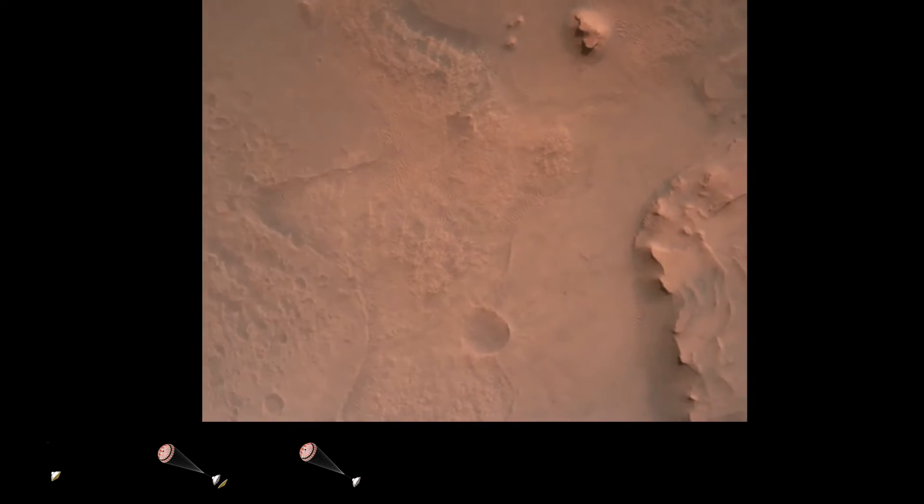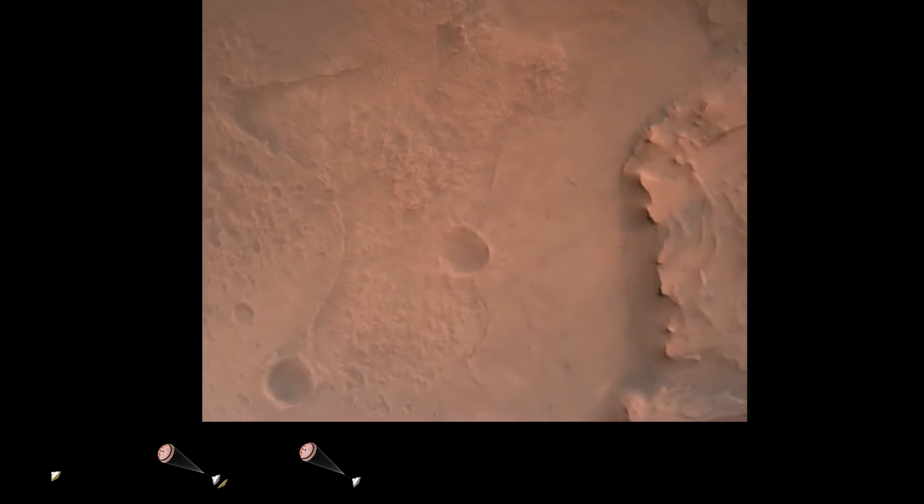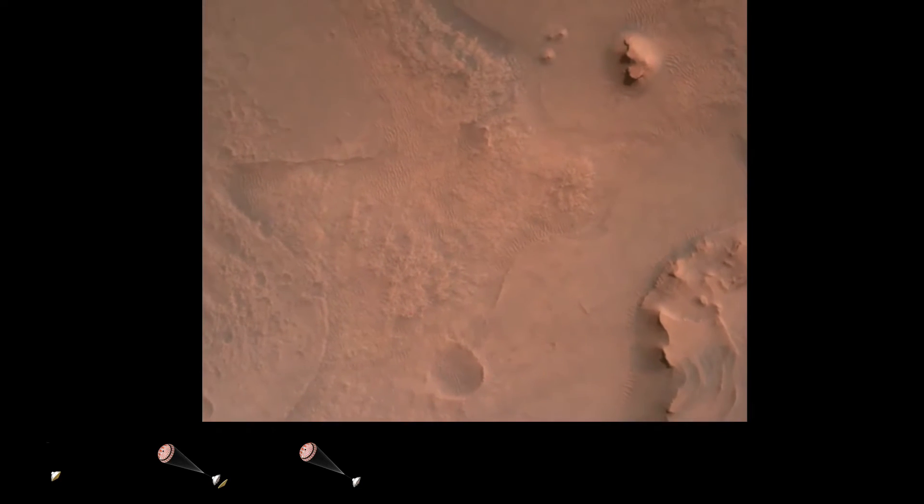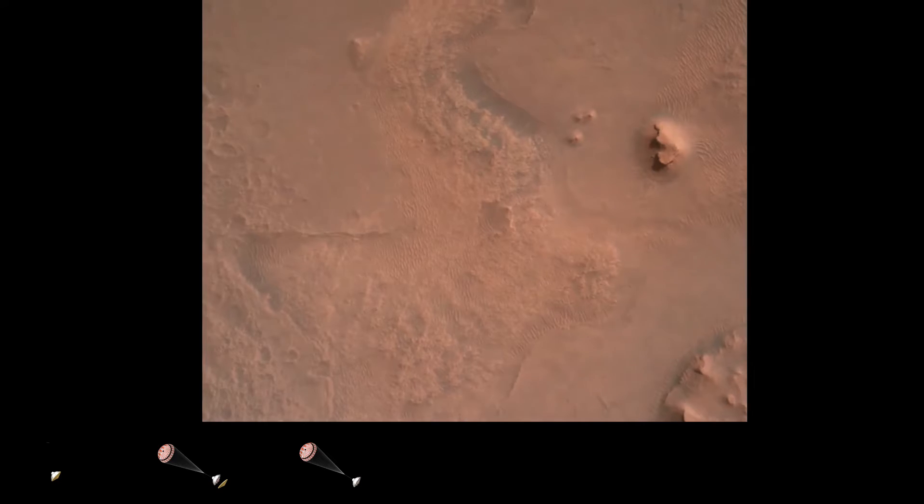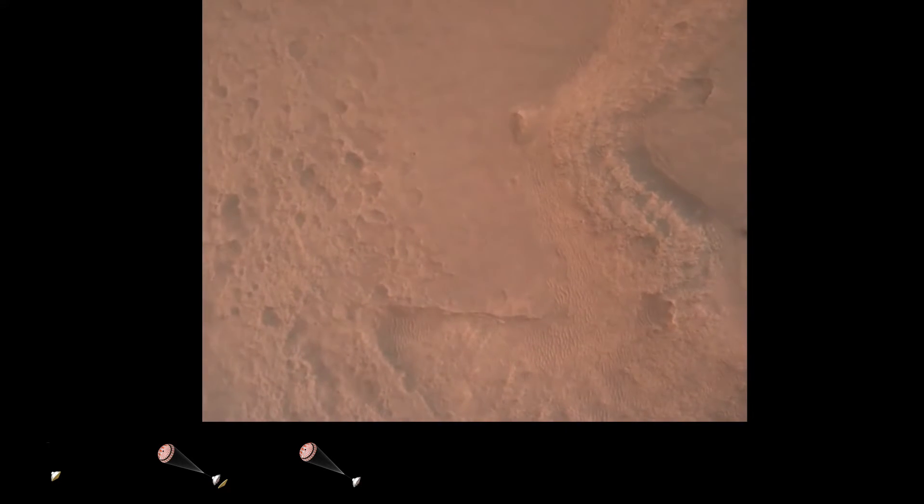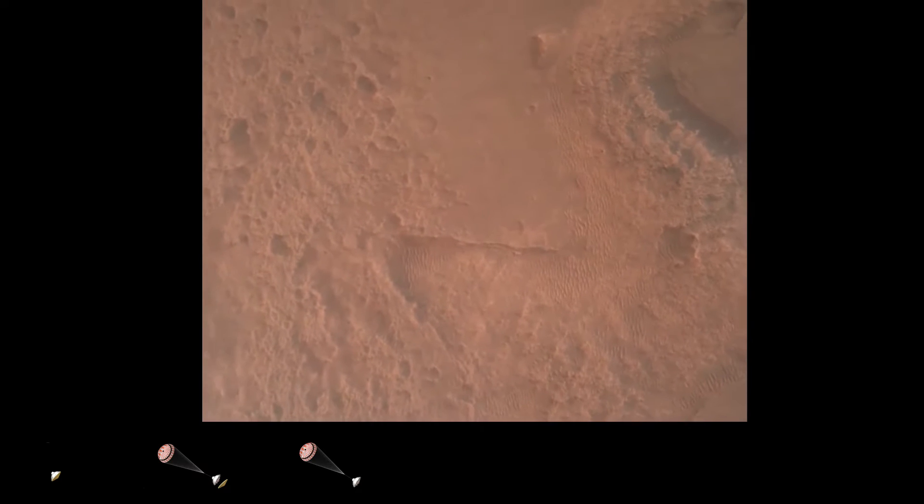Perseverance is continuing to descend on the parachute. We are coming upon the initialization of terrain-relative navigation, and subsequently the priming of the landing engines. Our current velocity is about 90 meters per second, at an altitude of 4.2 kilometers.